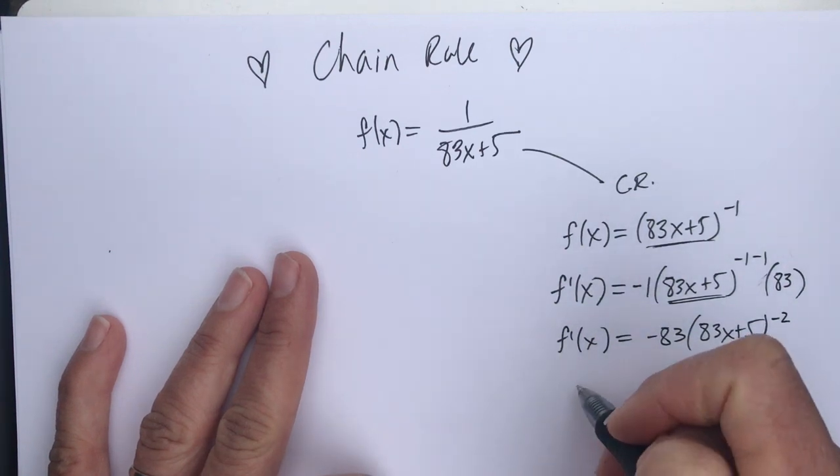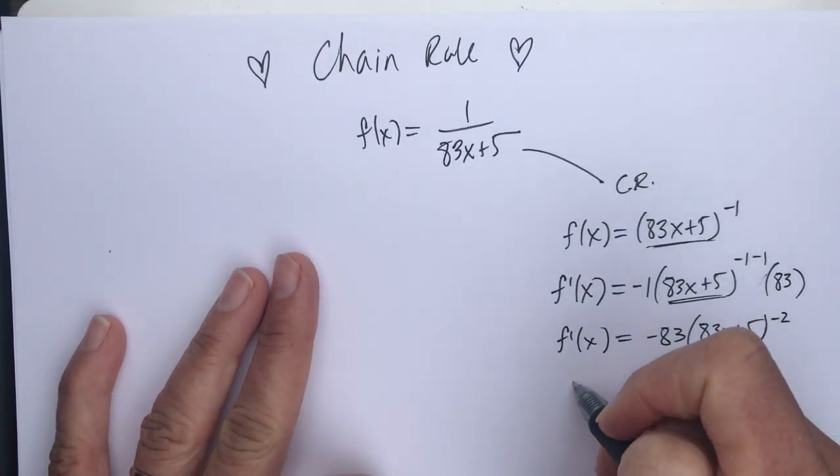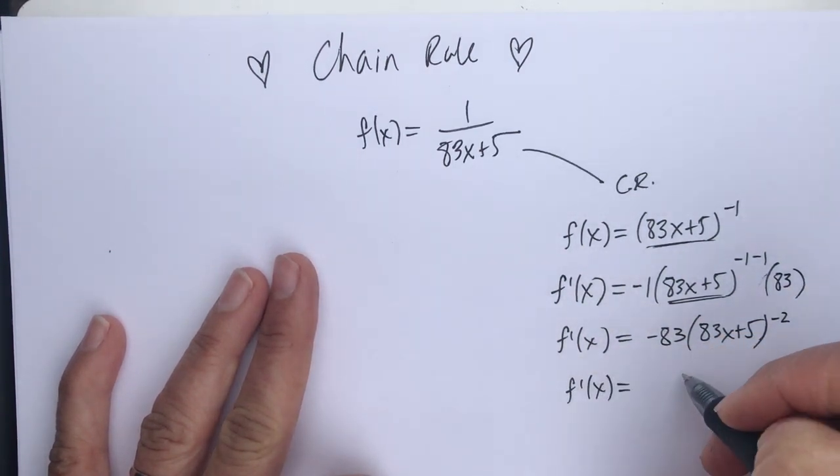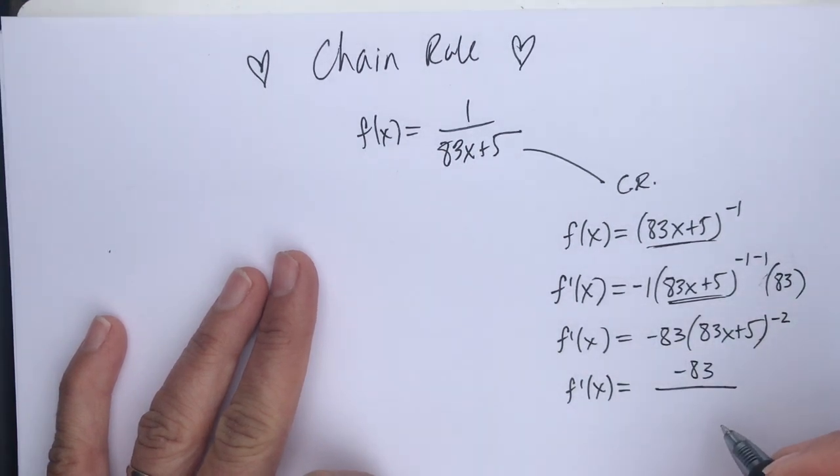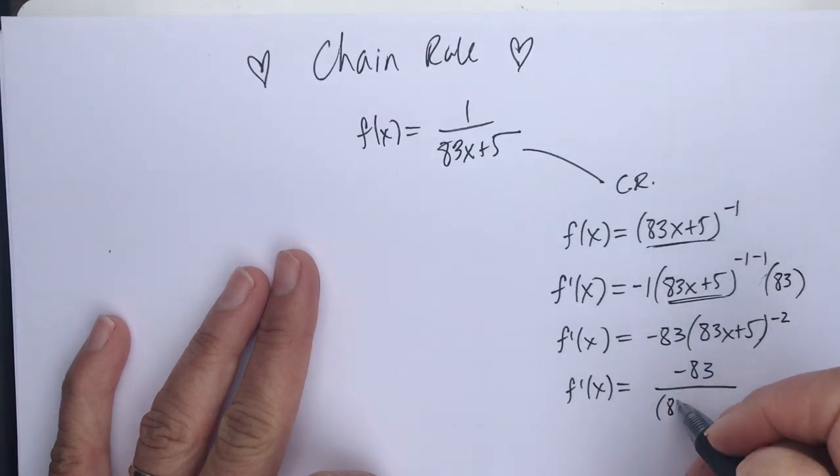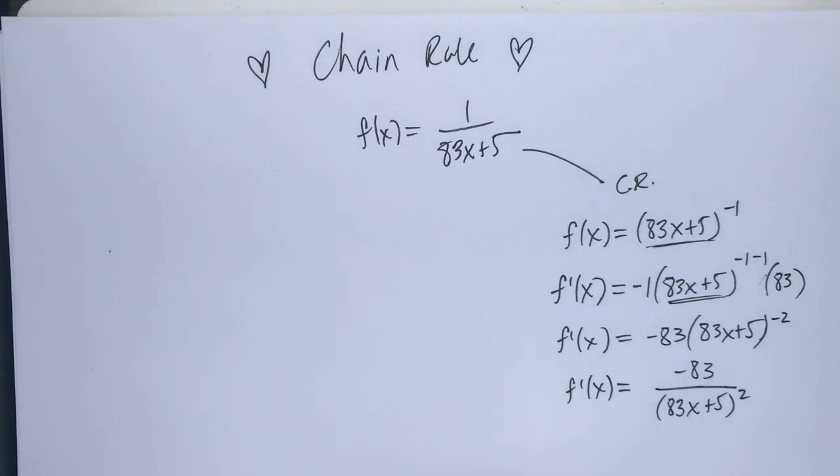And I never love leaving in negative exponents, so I'm going to say my derivative is negative 83, and move this 83x plus 5 to the negative 2nd power to the denominator. And there we have the derivative using the chain rule.